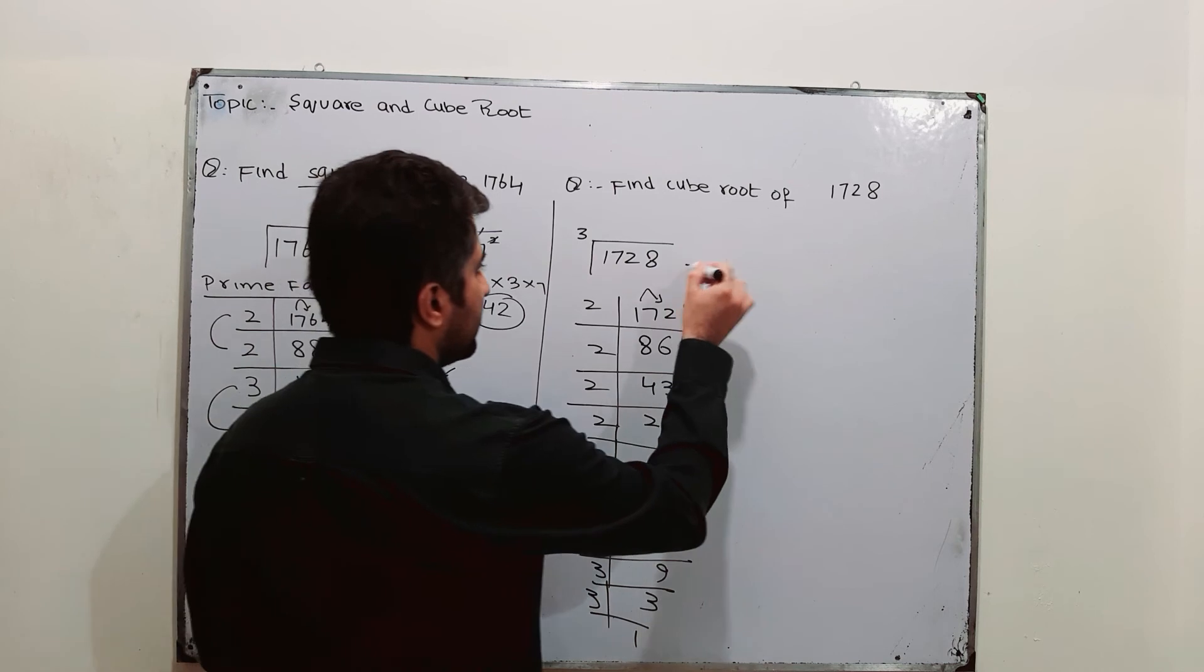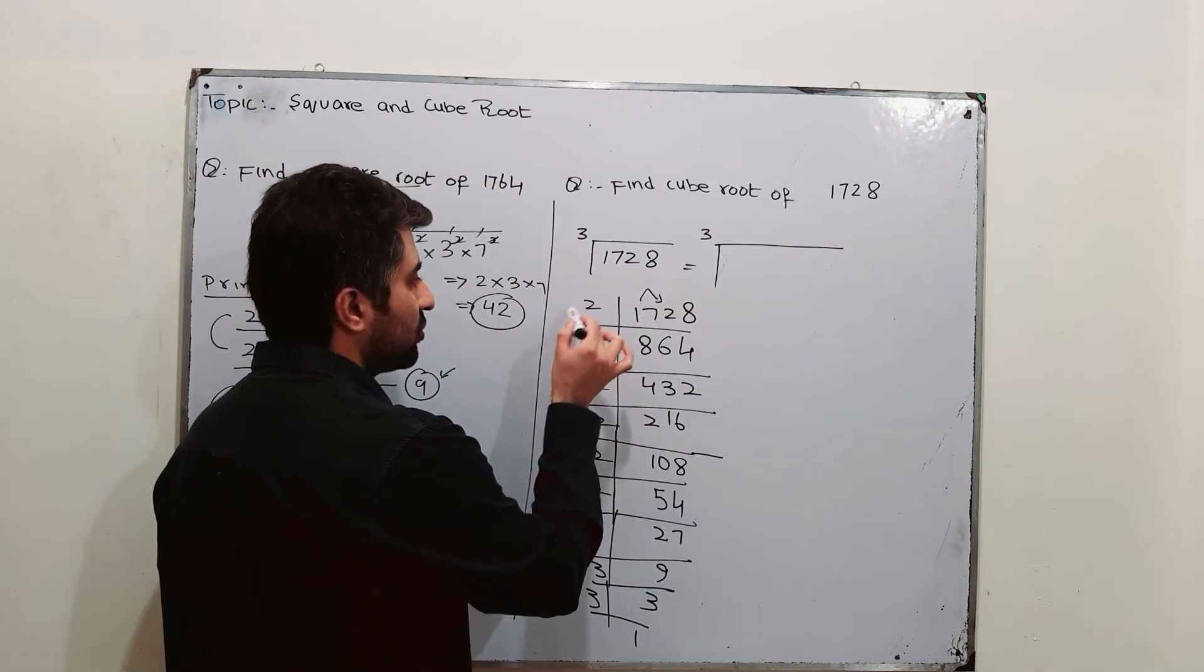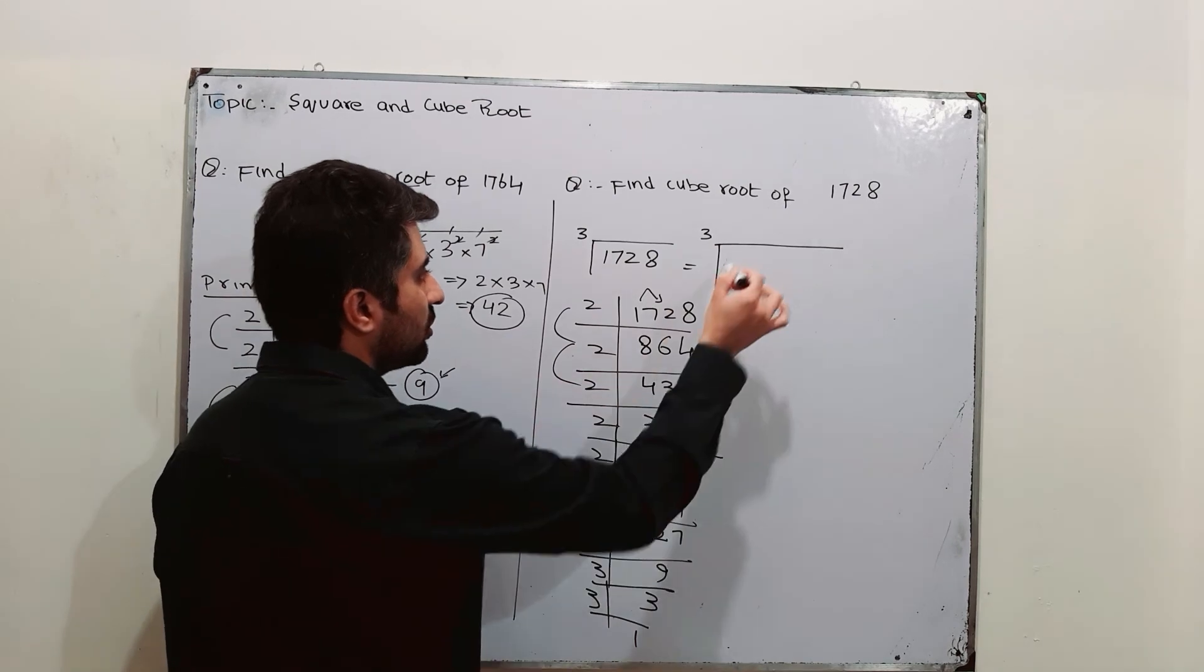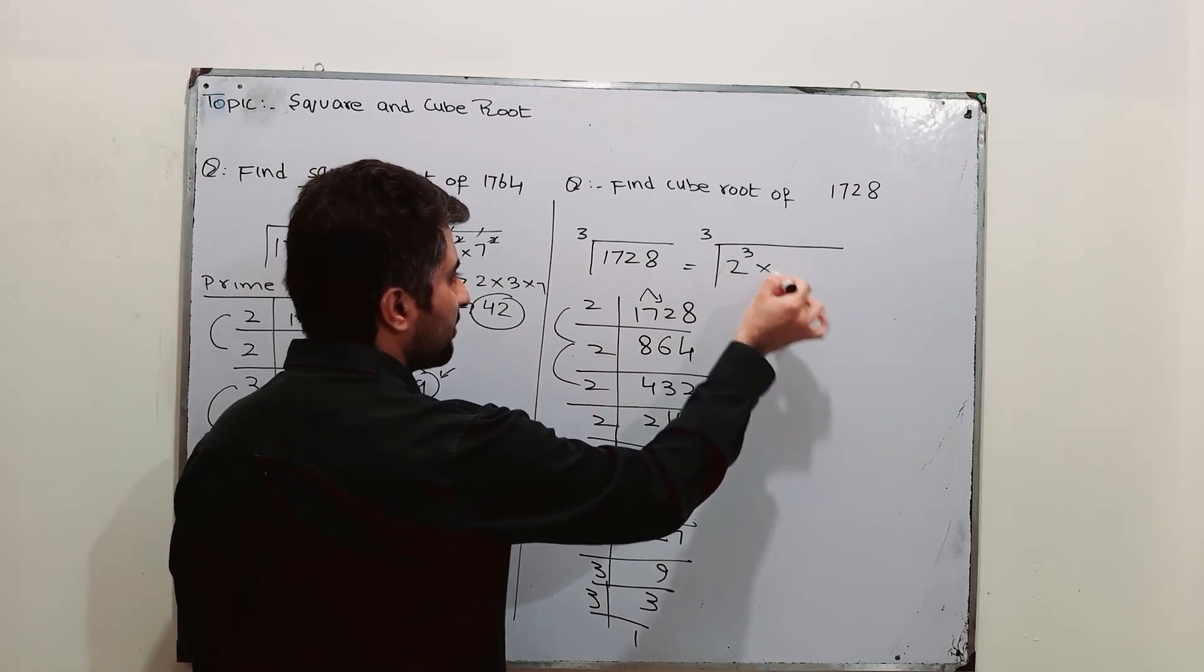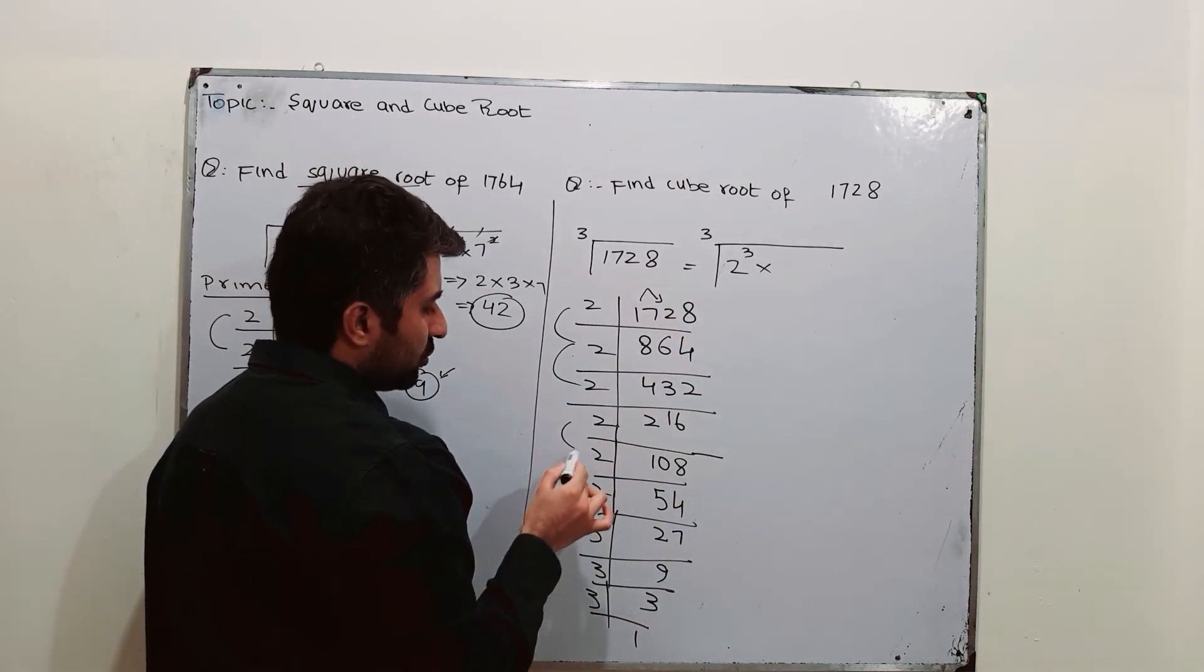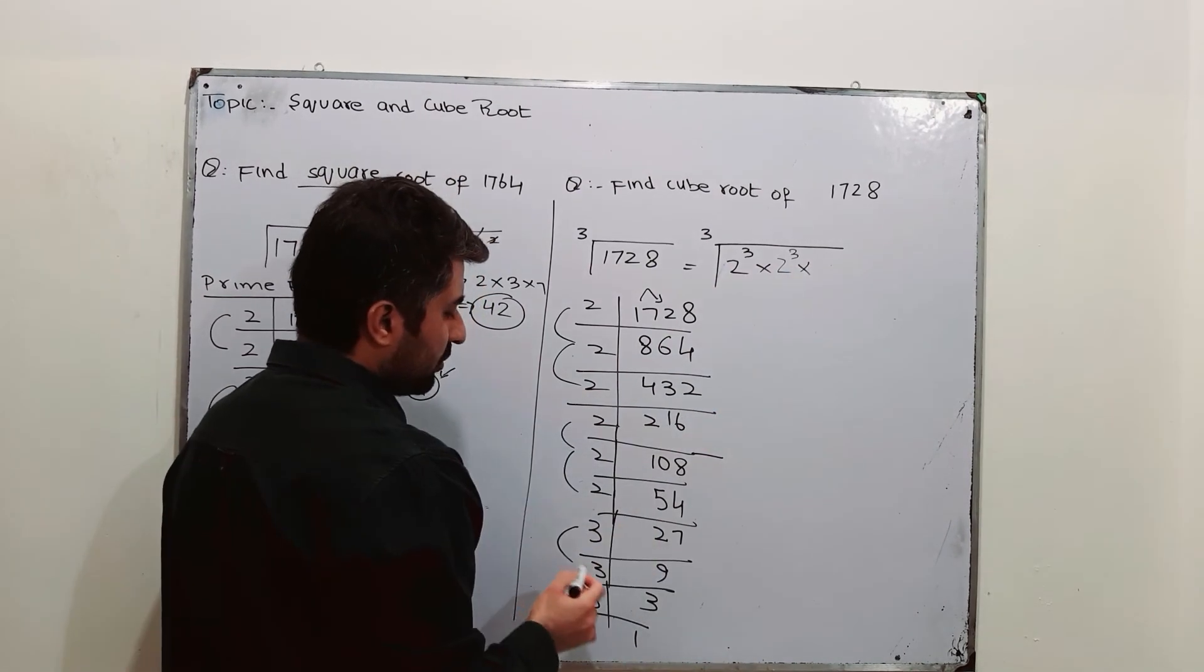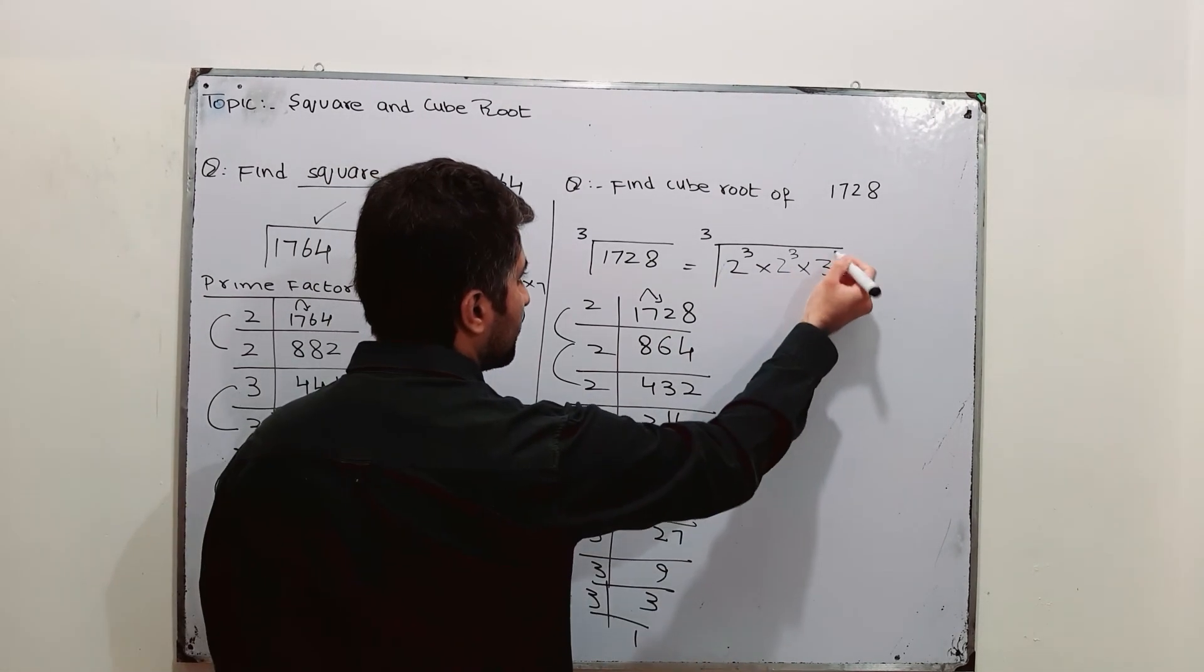Now, I can write this as 2 into 2 into 2. Now, observe that I am writing numbers in power of 3, in cube form. Again, 2 into 2 into 2 is 2 cube. 3 into 3 into 3 is 3 cube.